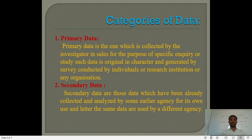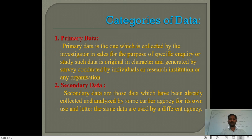Primary data means data which is collected for the first time, originally, through an investigator, research organization, or research institution. They go and collect data by observation, by questionnaire, by mail questionnaire, or by interview. Primary data means original data collected for the first time from individuals.